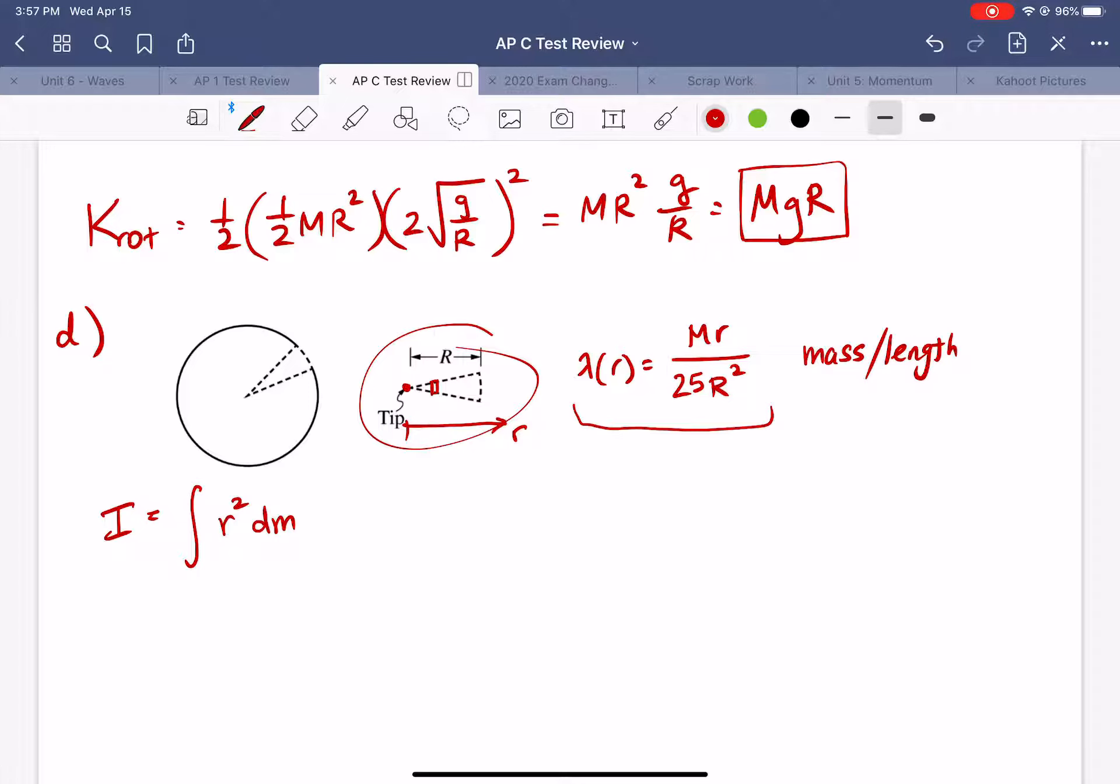So the mass of this slice here is going to be the density times the thickness of the slice which is our the value dr. All right so if we put all that together we're going to be performing an integral of r² times dm where again I'll write it out here dm is equal to lambda times dr.